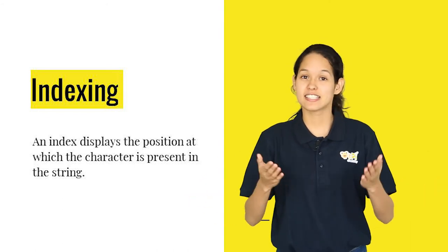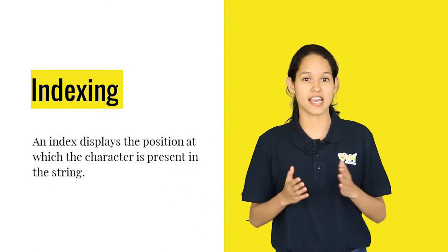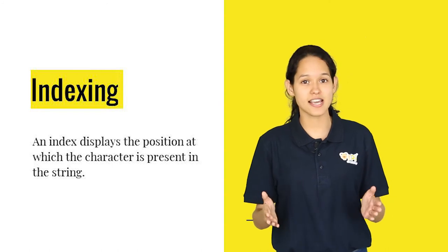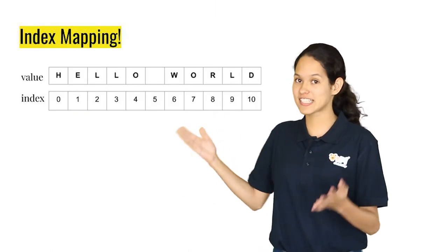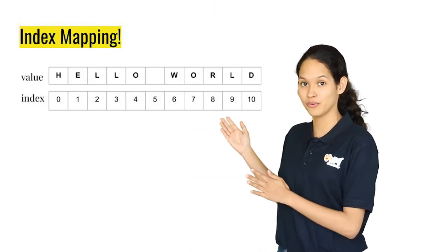What is an index? Similar to an index at the end of every book which displays the list of topics and the page at which that topic is present, an index displays the position at which a character is present in a string. For example, the index value of h is zero and w is six.